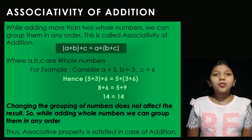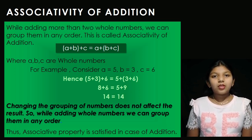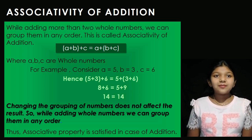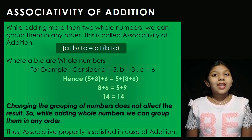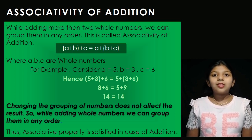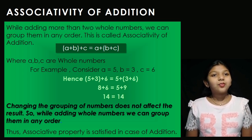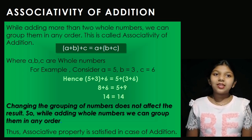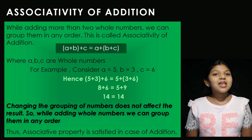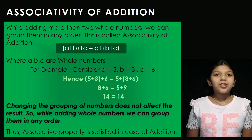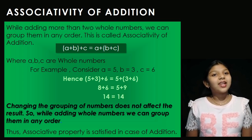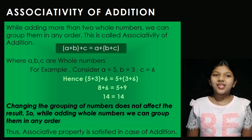Changing the grouping of numbers does not affect the result. So while adding whole numbers, we can group them in any order. Thus associative property is satisfied under addition.